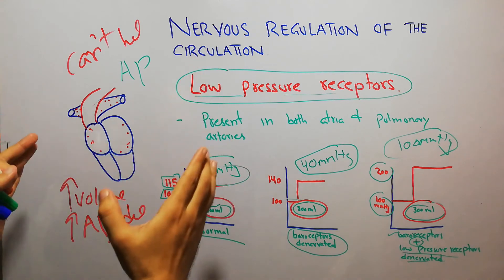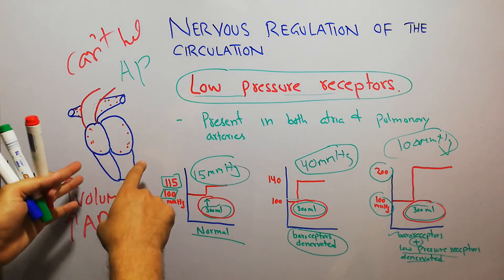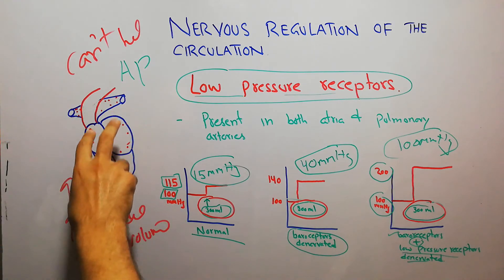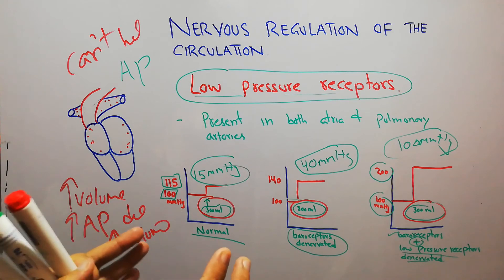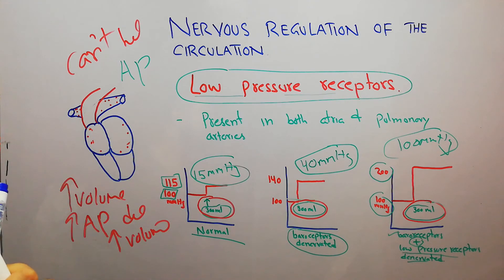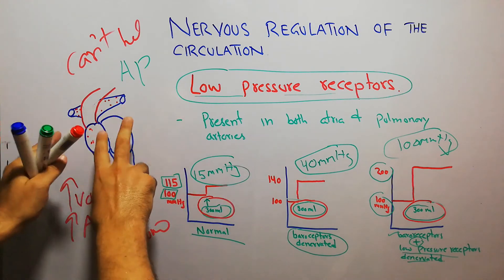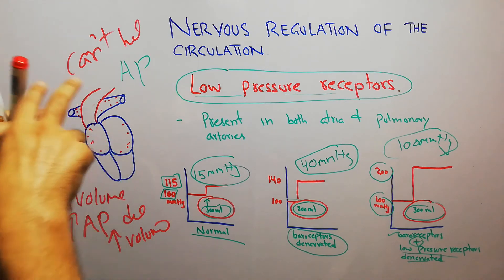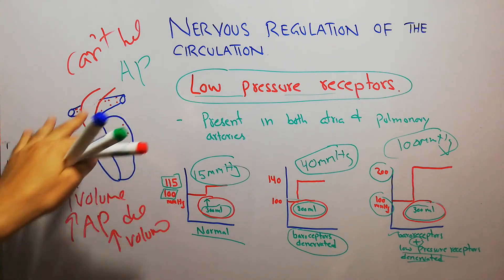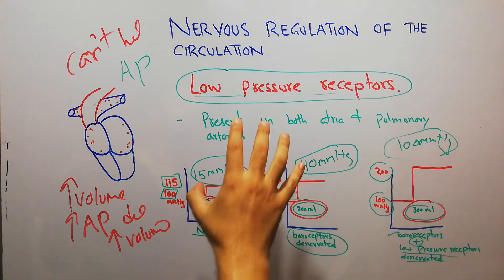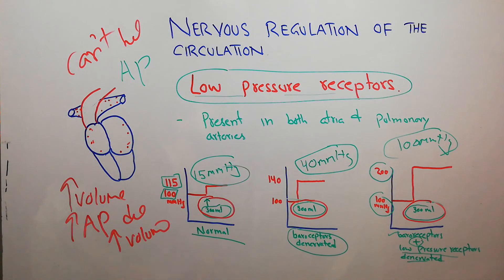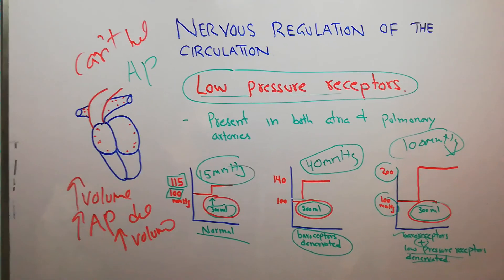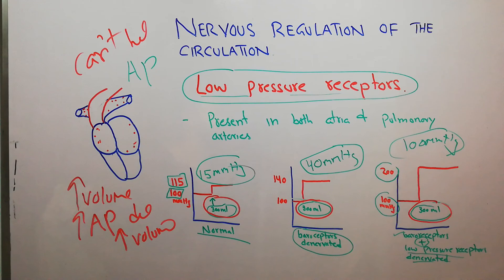Low pressure receptors are helpful in keeping arterial pressure in check, but only when there is an increase in pressure at a low pressure site like pulmonary arteries and atria. They do not help if there is a systemic increase in arterial pressure. They specifically help when blood volume increases, as the pressure in these areas increases only with increased volume. That's all about low pressure receptors and their role in maintaining arterial pressure.